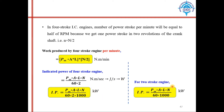For a two-stroke engine, indicated power is also P·L·A·N divided by 60. In a two-stroke engine, the number of power strokes equals the number of revolutions — there is no division by 2. To convert to kilowatts, divide by 1000. So that is indicated power for four-stroke and two-stroke engines respectively.